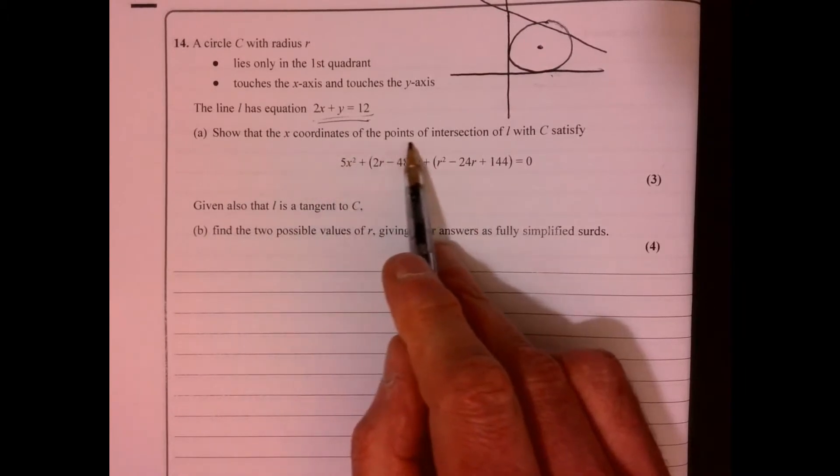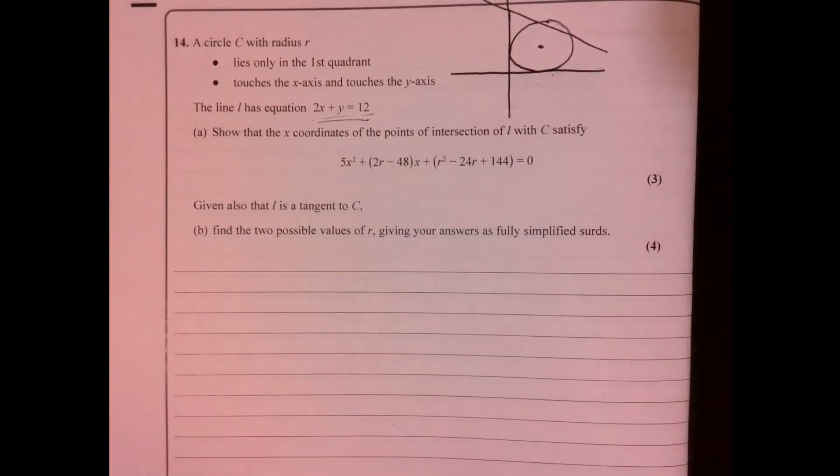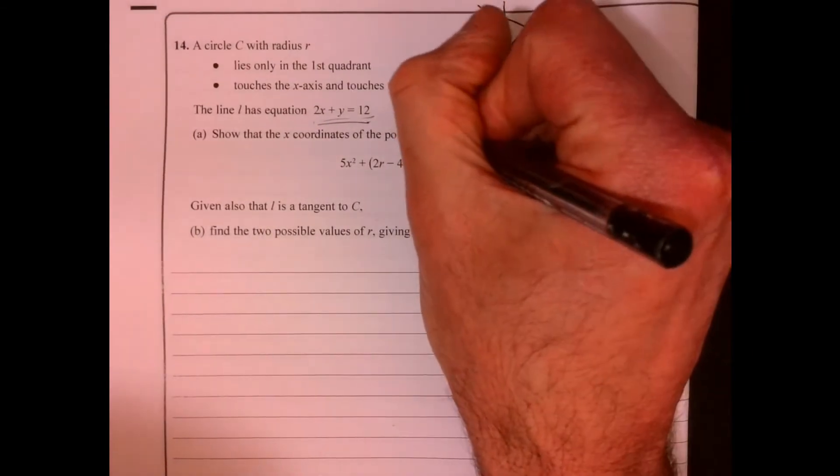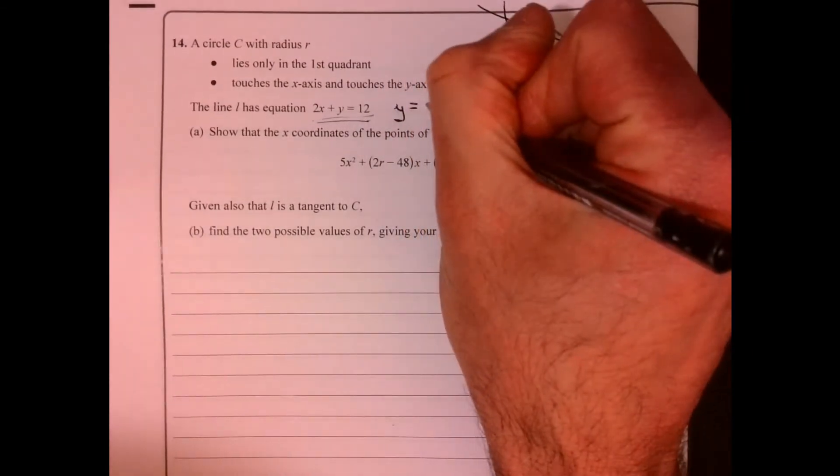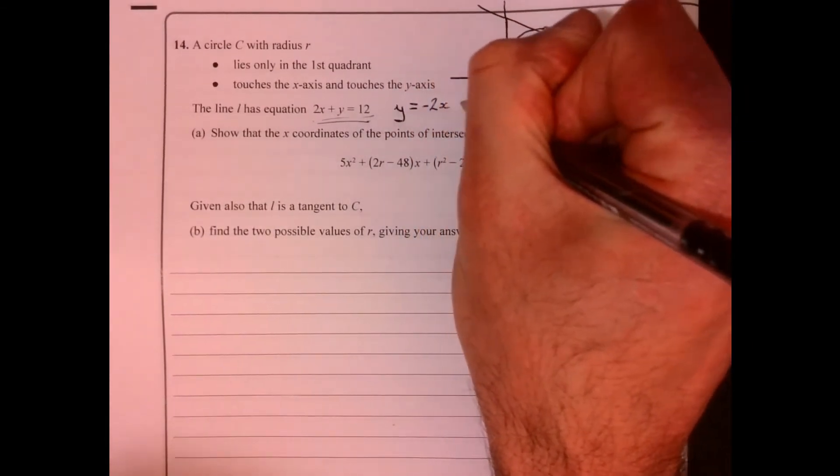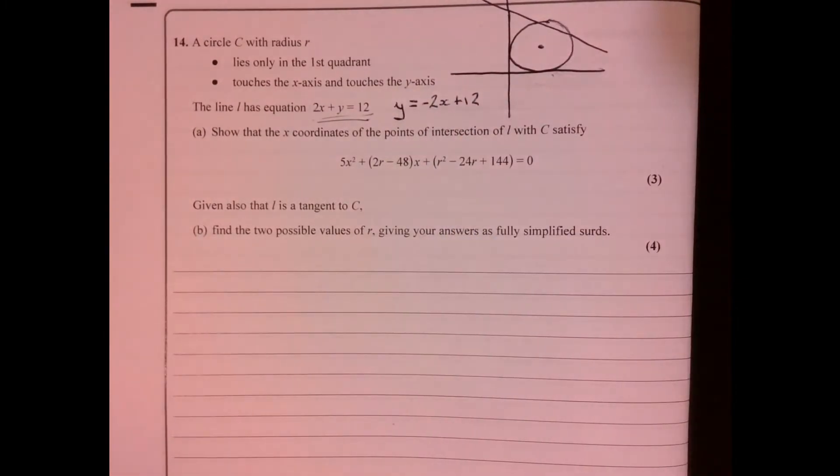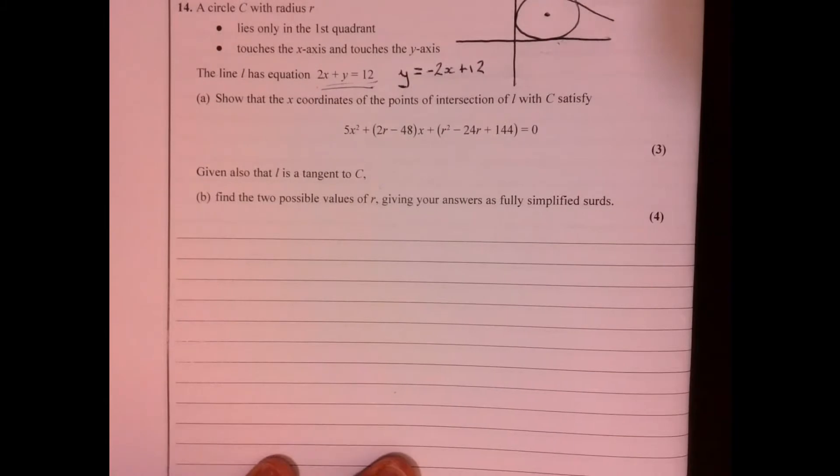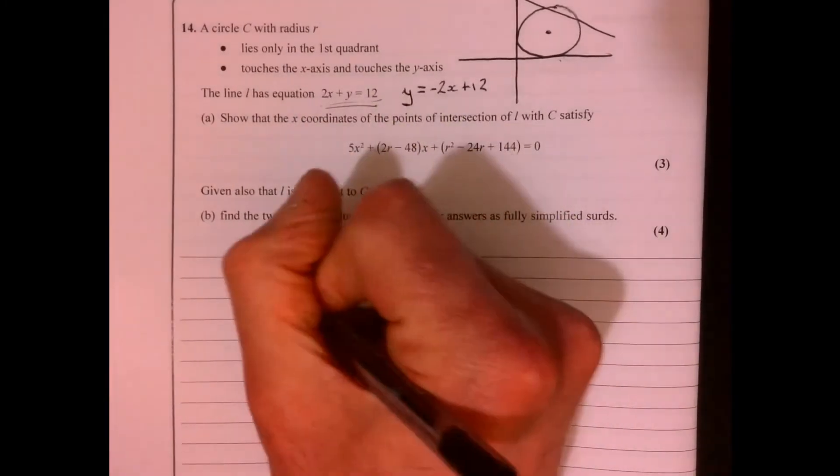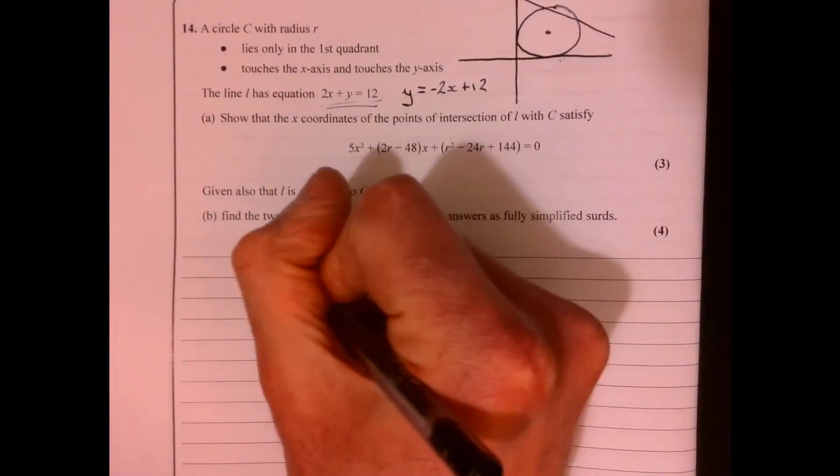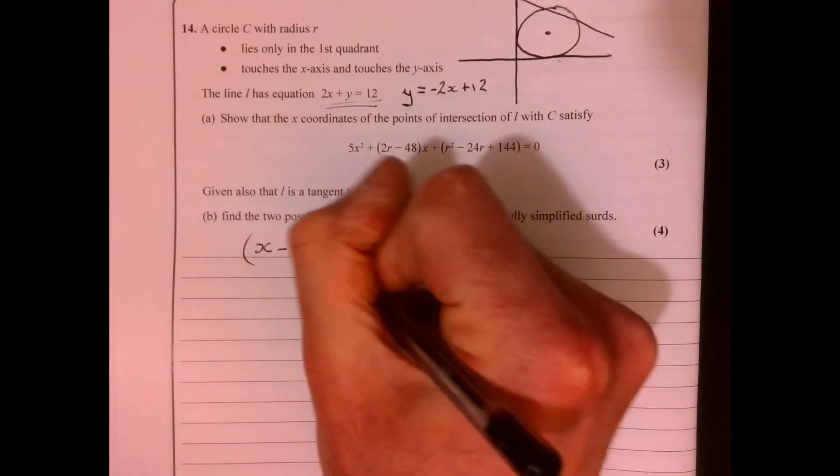So first bit is show that the x-coordinates are the points of intersection of L, so this is line L. First thing I'm going to do is we're going to rearrange this so it's y equals minus 2x plus 12. The other thing that we should know is that the equation of a circle looks like this.